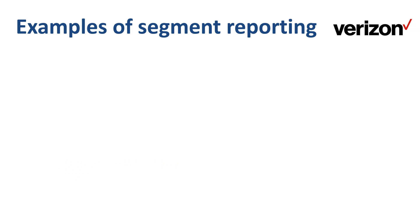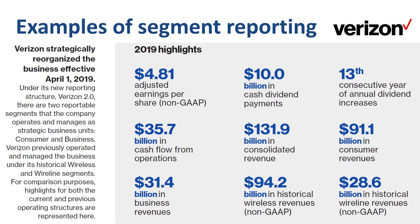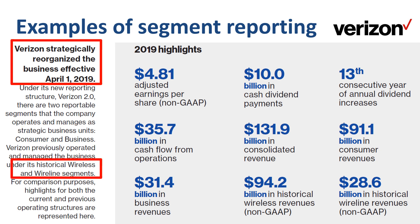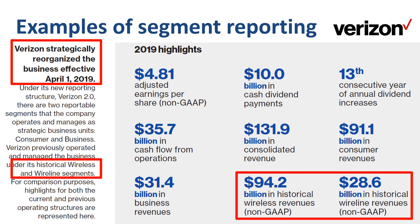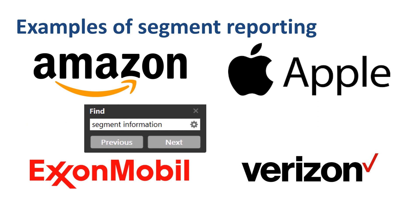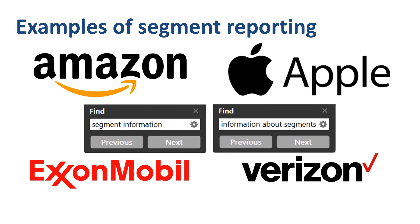If a company reorganizes internally, then the external segment reporting changes accordingly. Verizon has two reportable segments that the company operates and manages as strategic business units: consumer and business. Verizon previously operated and managed the business under its historical wireless and wireline segments. For comparison purposes, highlights for both the current and previous operating structures are represented here side by side. These real-world examples of segment reporting illustrate how useful operating segment information can be to investors. Do a search using the terms 'segment information' or 'information about segments' in the notes to the financial statements of the 10-K filing of any listed company, and see what you can uncover.